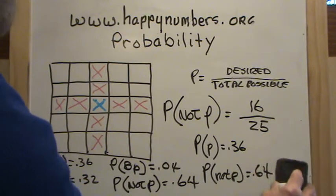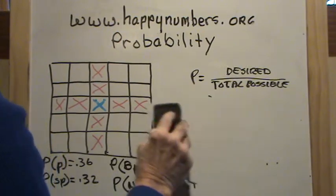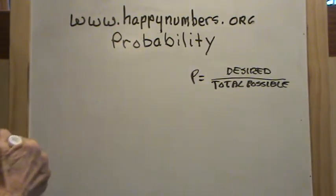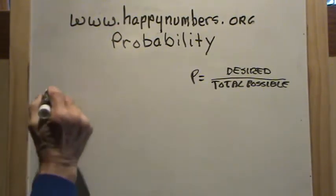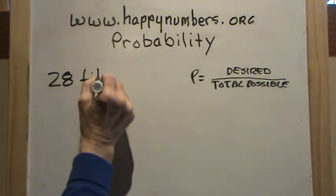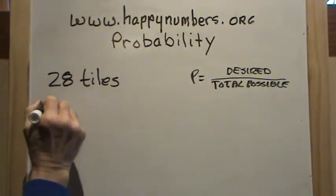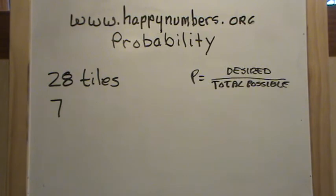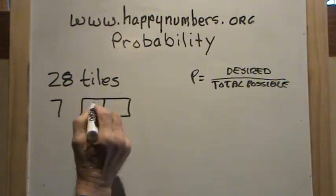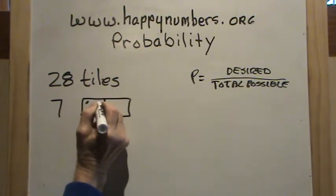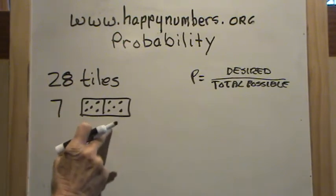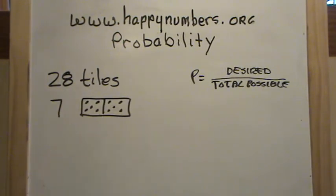Let's take a look at another example. I have a set of dominoes. The dominoes have 28 tiles in them, and seven of these tiles have the same number of dots on each side — like double-one, double-two, double-three, double-four, double-five. So seven tiles have doubles.